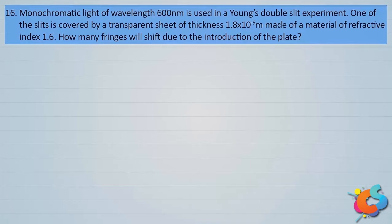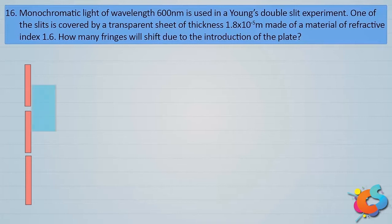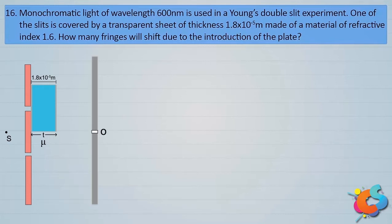Students should know this idea. In a Young's double slit experiment, if you place a transparent medium of some thickness t in front of one of the slits — let this be a monochromatic source of light, with the thickness of this medium being t and its refractive index mu — then the effect of introducing this plate is that the entire fringe pattern gets shifted towards the side where you place the plate.